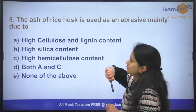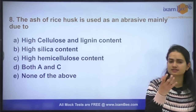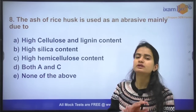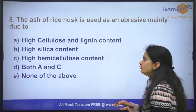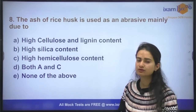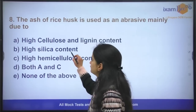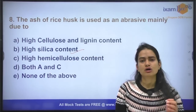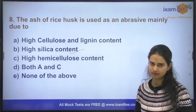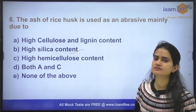Question number eight: rice husk ash is basically used for abrasion purposes. What property makes it suitable for this? It is because of its high silica content. The straw of rice also has high silica content, which is why it is said that animals cannot use rice straw as feed.